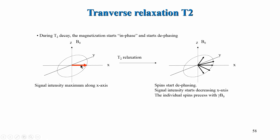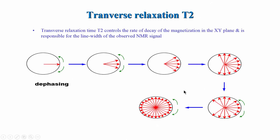In the non-equilibrium situation, the signal is maximum along the x-axis and spins start de-phasing in the x-y plane. Looking from the z-axis down into the x-y plane, you can see the spins are de-phasing — this circle is in the x-y direction with x and y axes visible. After some period of time, looking from the z-axis, the spins are completely de-phased. This marks the end of the T2 process.